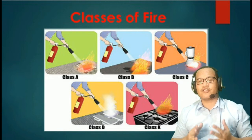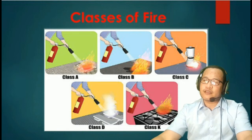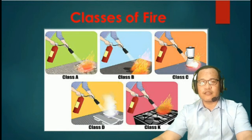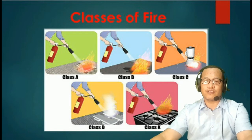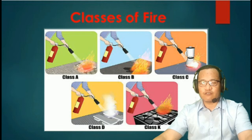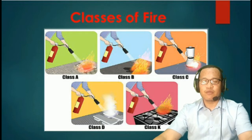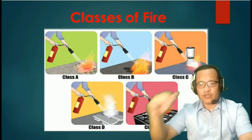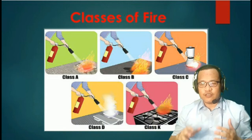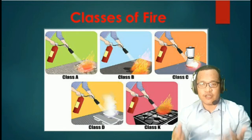Now that we have identified the fire triangle, it is also important for us as aircraft mechanics to identify the classes of fire. For those not in the aviation industry, they might say fire is just fire — which is true in the sense that it can cause lives and damage to property. But in the airline industry, it is important to identify the types or classes of fire, because if we can identify them, we can determine the effective fire extinguishing material to use.